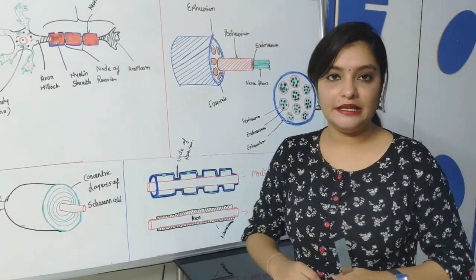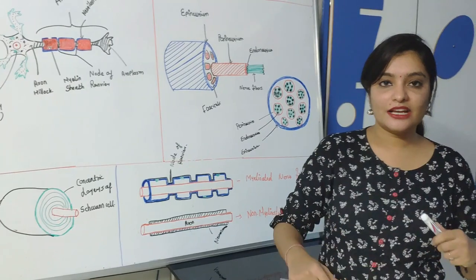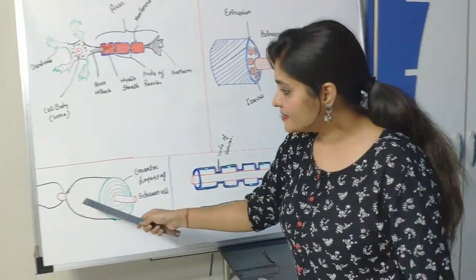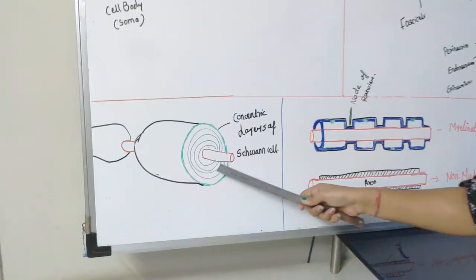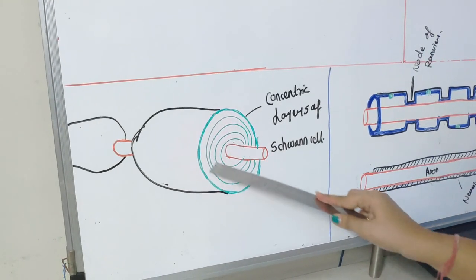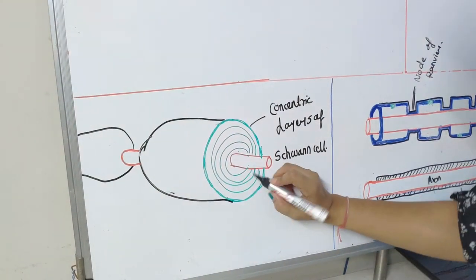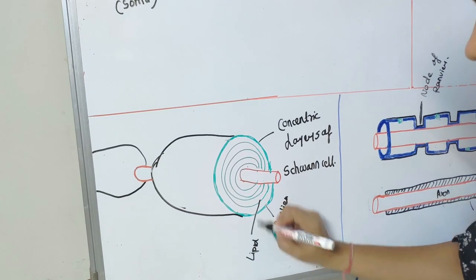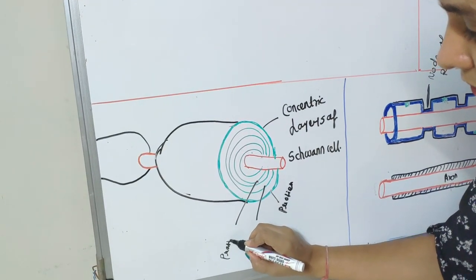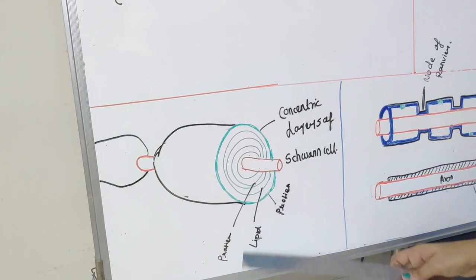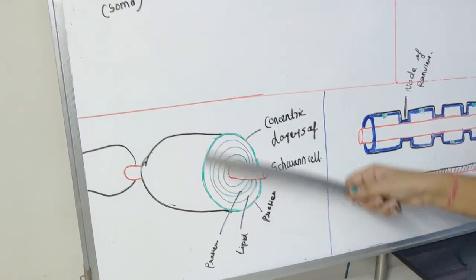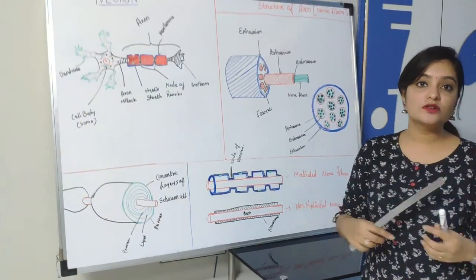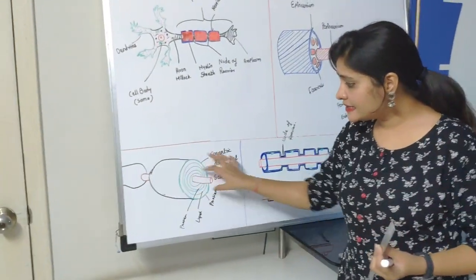Now we will see the structure of myelination. Myelination is actually a concentric layer of lipid and alternating protein. You can see this is the nerve fiber surrounded by the concentric layer. These concentric layers alternate between protein and lipid — one layer is made up of protein, then one is made up of lipid, then again protein. So it is a concentric layer of protein alternating with lipid. This myelination is white in color, that is why the nerve fiber looks white.